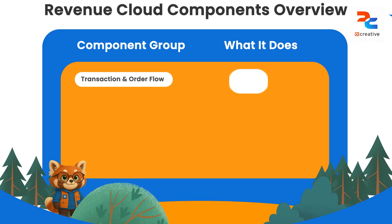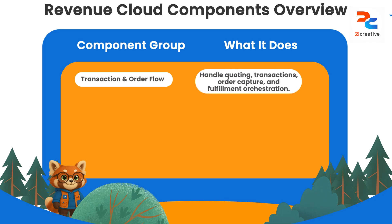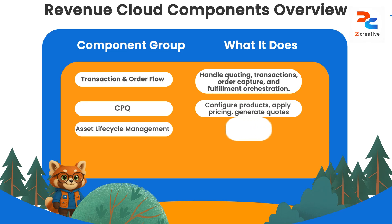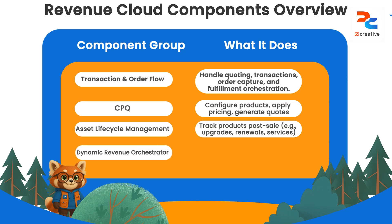The second part of RCA is transaction management and order-to-cash. All transactions are managed as part of CPQ, and order-to-cash means the order was placed by the client and cash has flowed to the company — that's the revenue. That's the configure, price, quote part. Then we have asset lifecycle management: once quoting is done, the product becomes an asset. And then you have dynamic revenue orchestration, called DRO, which was known as order management before in Salesforce Industries.